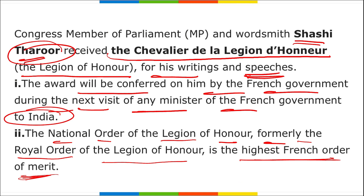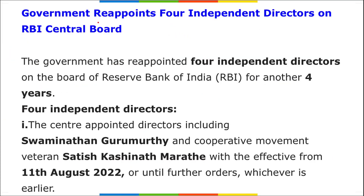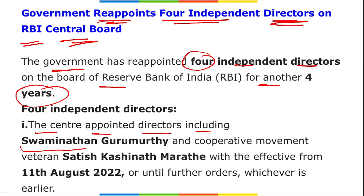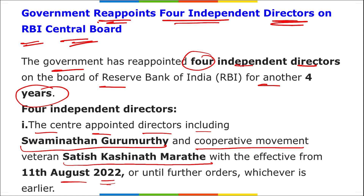Next: The government has reappointed four independent directors on the RBI Central Board for another four years. These four central-government-appointed independent directors include Swaminathan Gurumurthy and cooperative movement veteran Satish Kashinath Marathe, with effect from 11th August 2022 or until further orders, whichever is earlier.